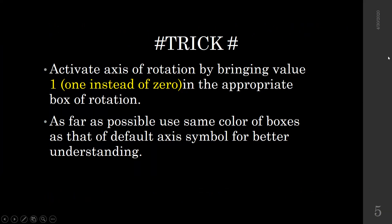Activate the axis of rotation by bringing the value to 1 instead of 0 in the appropriate component of rotation. There will be minus 90 or plus 90 type buttons — just click those buttons and your box will contain 1 instead of 0. As far as possible, use the same default colors — red, green and blue — for the boxes for better understanding.